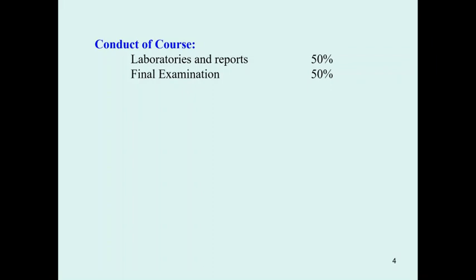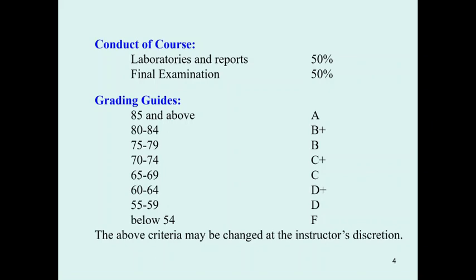This course is separated into two parts: lecture and lab, divided 50/50. For the lecture portion, we will have two examinations — one at midterm and one at the final — each worth 25%, totaling 50%. If you miss one exam, you still have another chance to collect yourself. The grading scale is: above 85 is A, and below 54 is F, though the F cutoff is at the instructor's discretion and may be as low as 50.